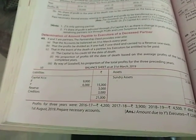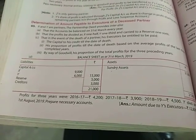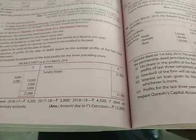Profits for the 3 years are given below the balance sheet: 4,200, 3,900 and 4,500. Y died on 1st August 2019. To pay necessary accounts. So this is the question.